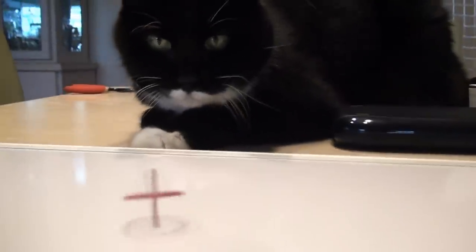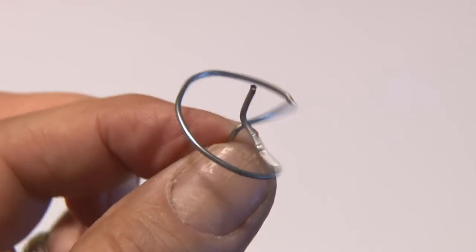The paperclip spinner is a lot of fun, and even Tux loves it, of course. It'll go for a pretty long time, and you can even make one with a larger size paperclip. It's a little bit more stable than the smaller one.